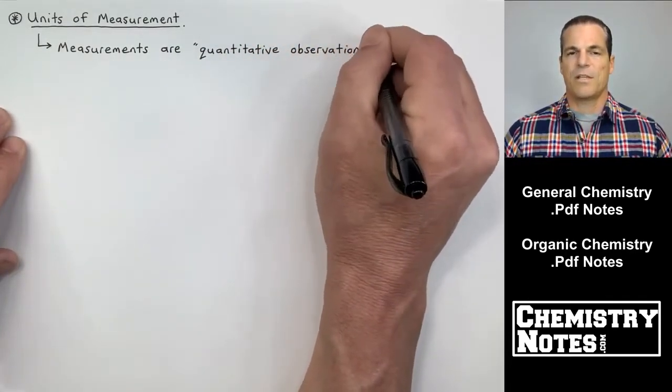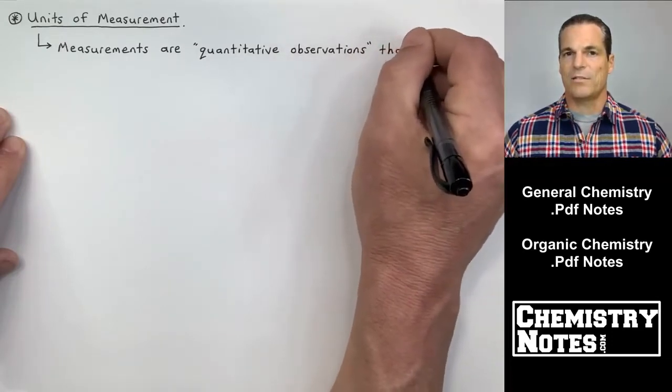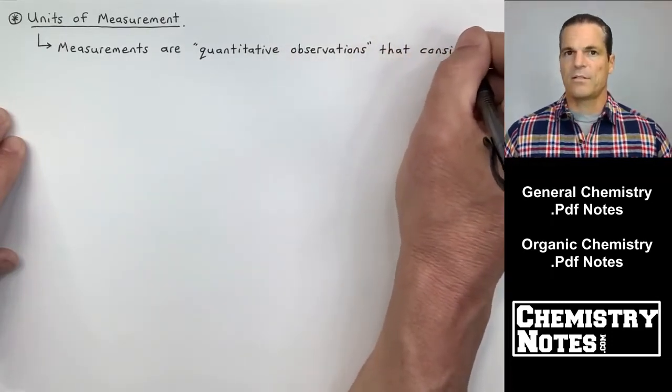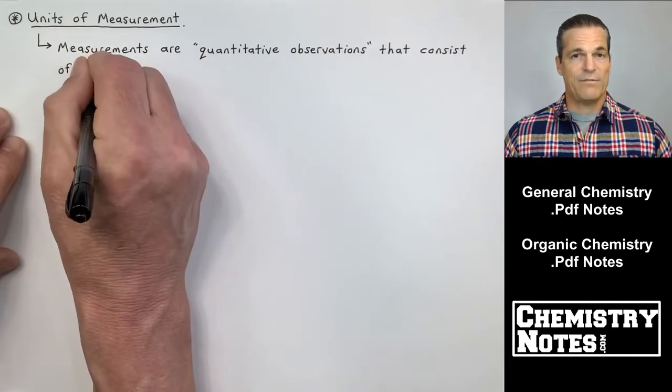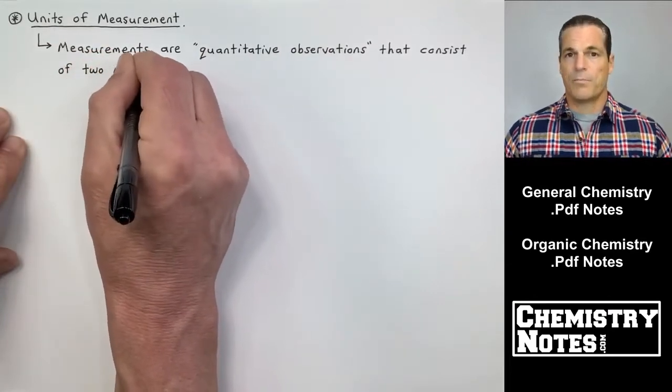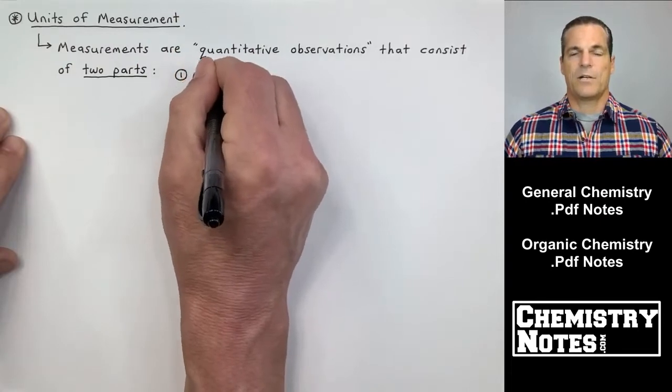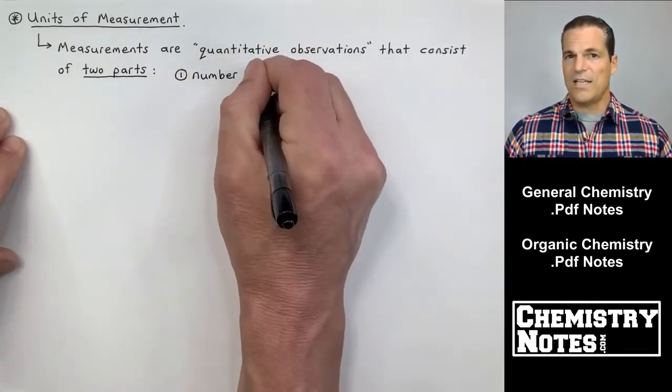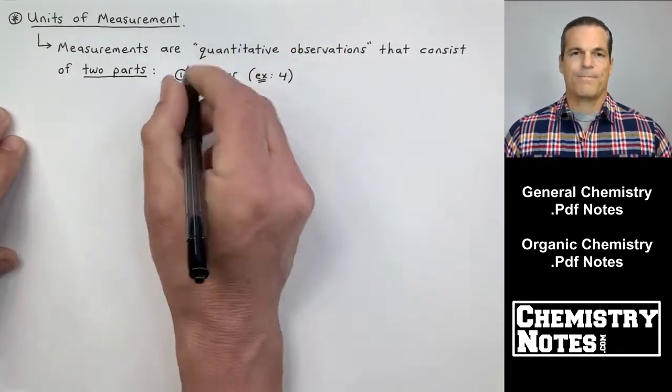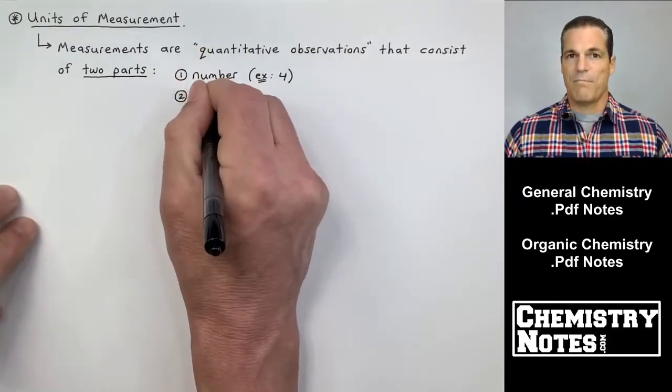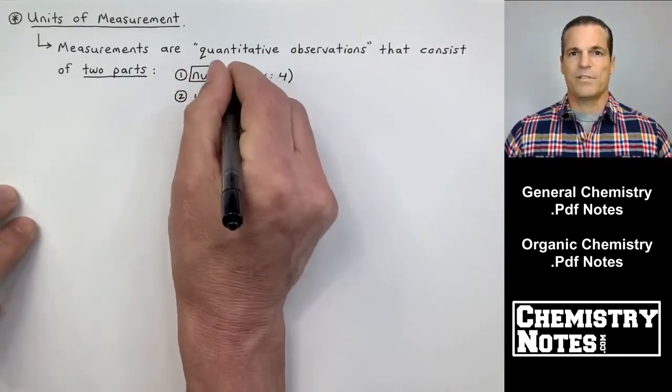So I'm going to introduce to you something called SI base units or SI fundamental units, also SI derived units, some of the prefixes that we use in chemistry, and then we're going to start to talk about uncertainty in measurement. I might also throw in a little bit on mass versus weight. So we got a pretty busy video here.